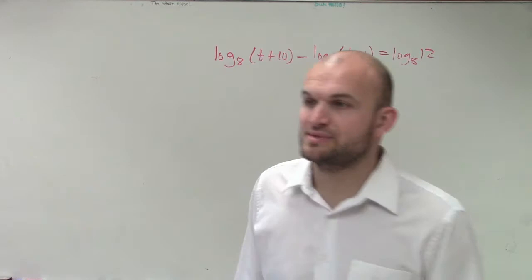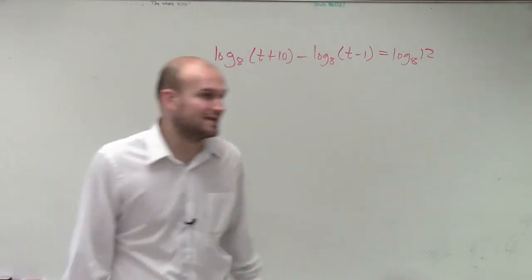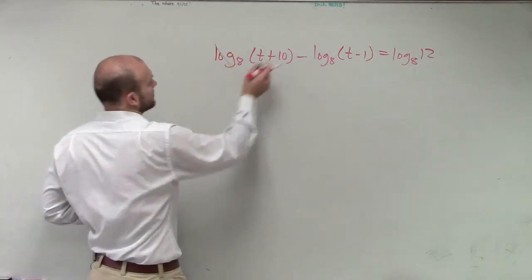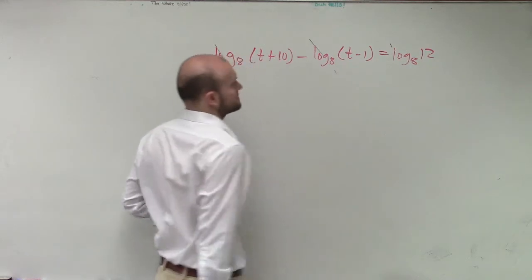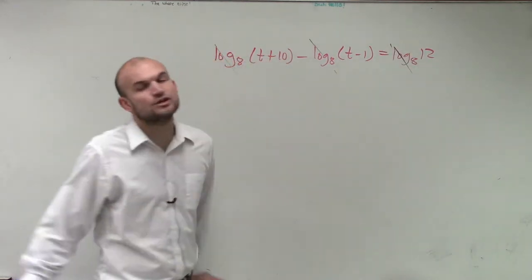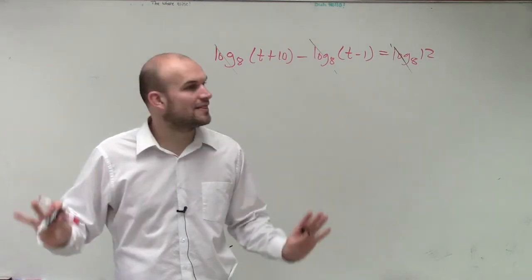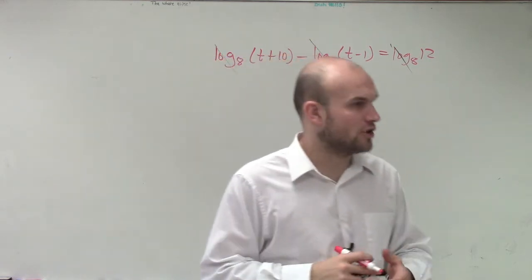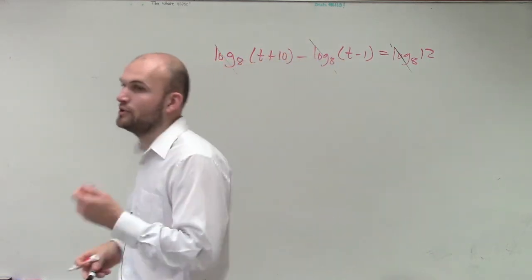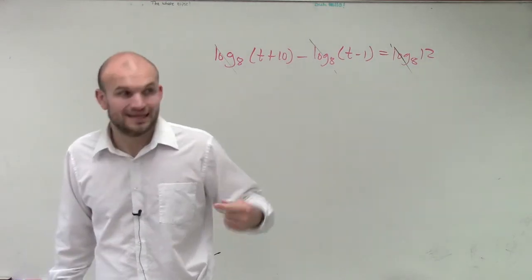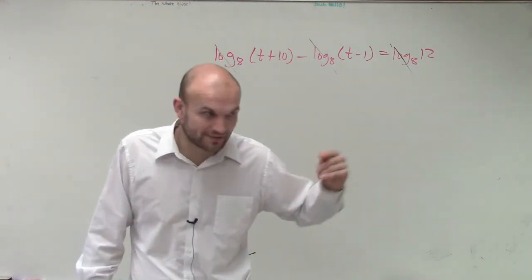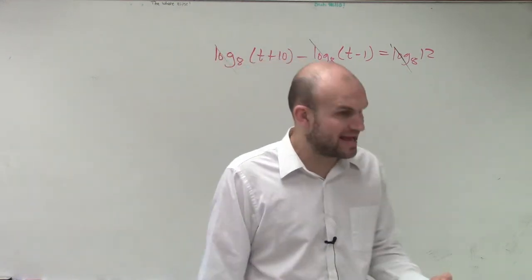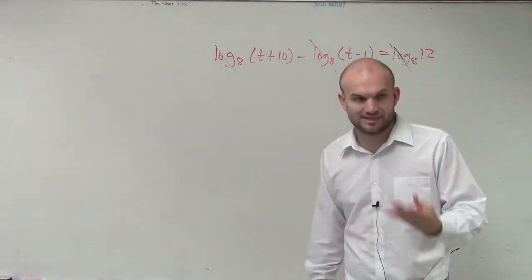I've already seen some students make the mistake, so I want to clarify before more students do this. Some students say 'oh, logarithms, equal sign, they all cancel out.' I want to say no. That is not the rule. The rule does not say when you have logarithms on both sides with an equal sign you just cancel all the logarithms. What the logarithm rule states is if you have one logarithm equal to another one logarithm with the same base, then what we're evaluating in each logarithm is equal to each other.